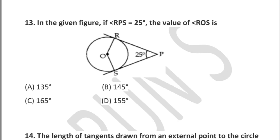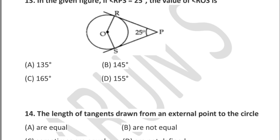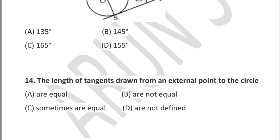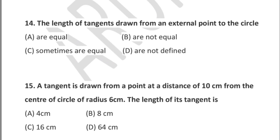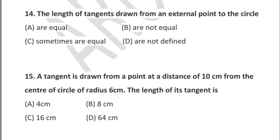Question 13: in the given figure, if angle RPS = 25°, then the value of angle ROS is — option A: 135°, option B: 145°, option C: 165°, option D: 155°.